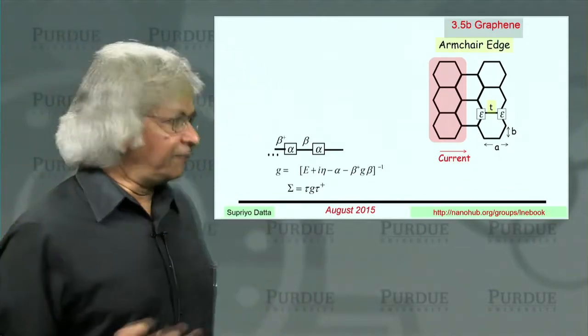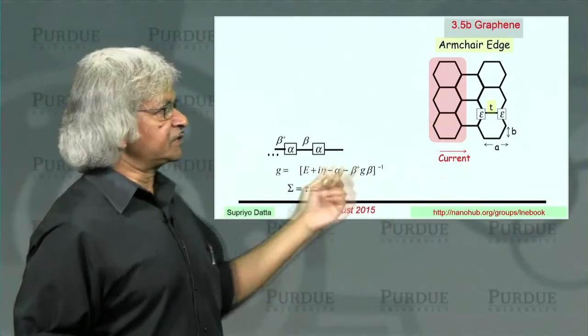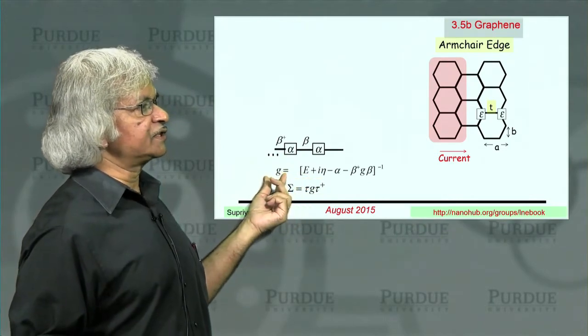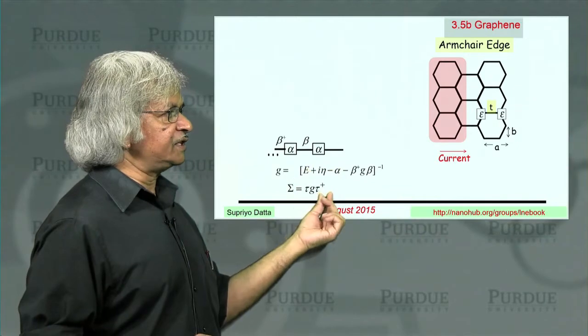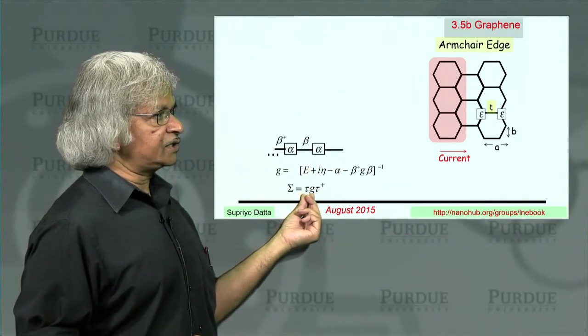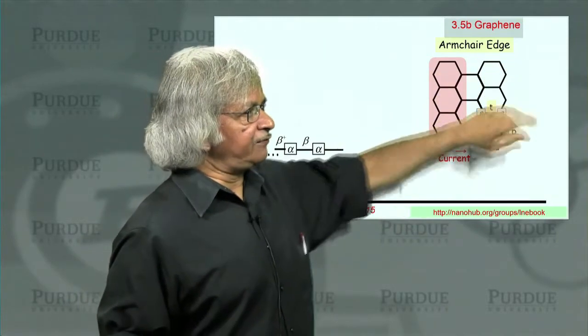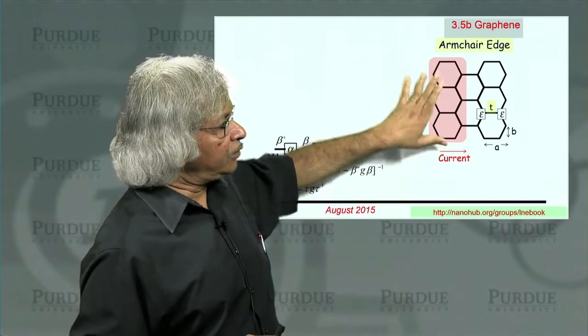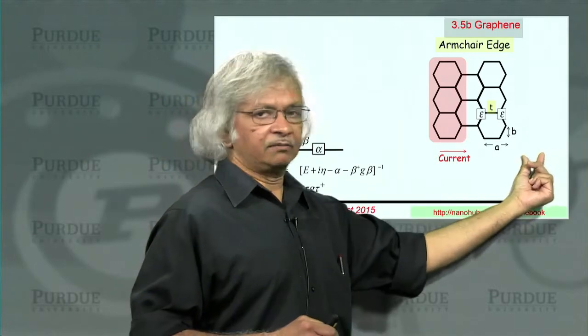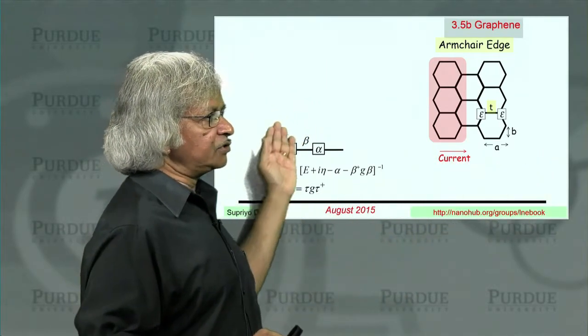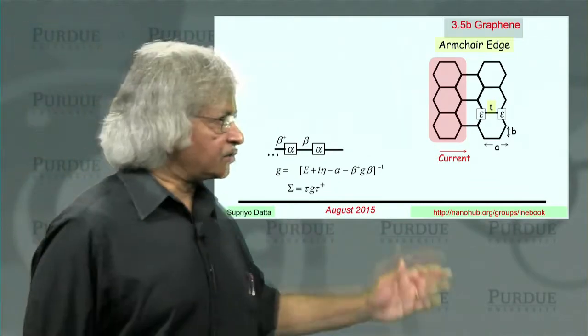But what you could use is the method we just discussed in Lectures 3 and 4. Because in Lectures 3 and 4, what we said is any structure that's described by alphas and betas, you could first find the surface Green's function by solving this matrix equation iteratively. And then once you have this surface Green's function, you could write the self-energy by taking this tau g tau dagger. So numerically, that is how you could handle this problem.